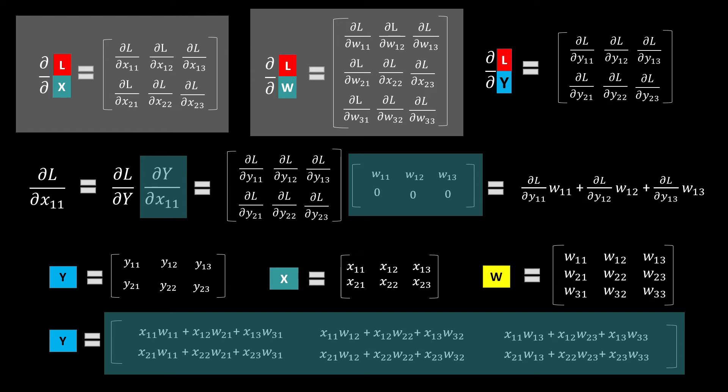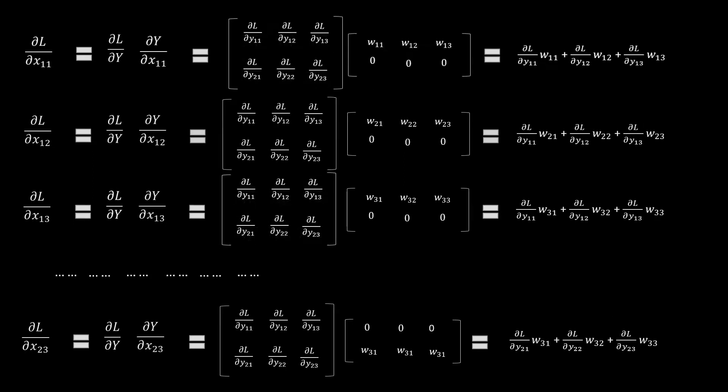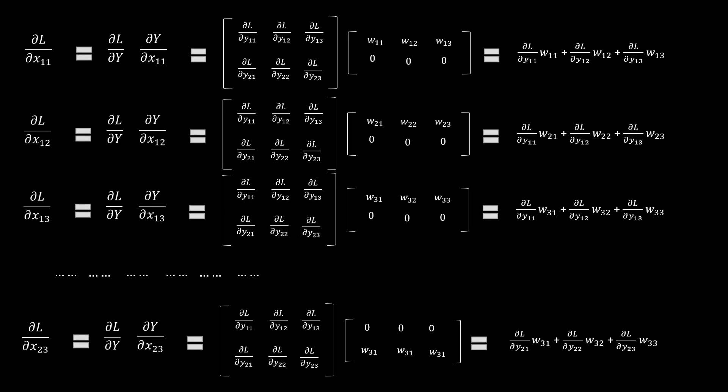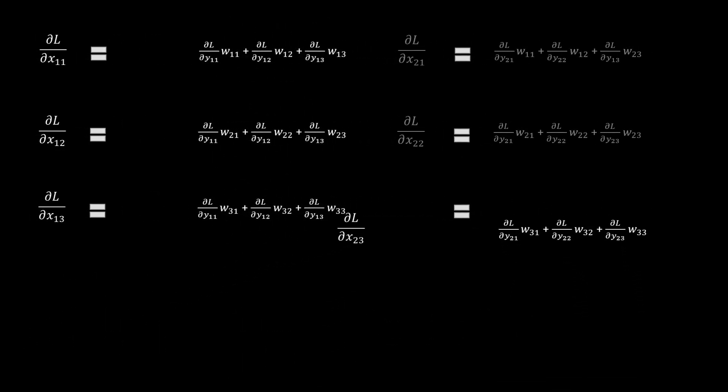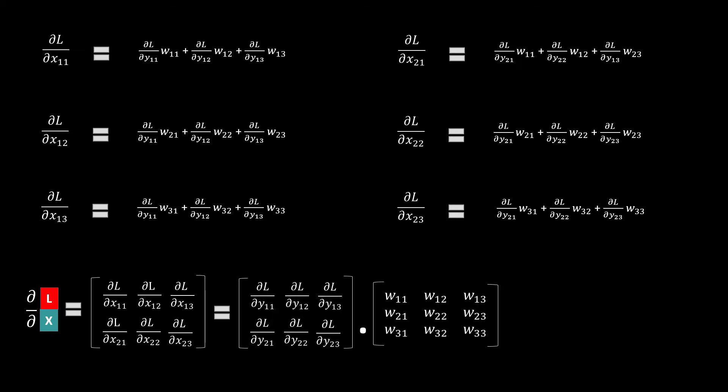We try to do that for all different terms and try to put them together. Then this would be ∂L/∂x11, x12, x13, and x23. If we try to put together like this so that we can rearrange back into a matrix, then ∂L/∂x would be something like this.